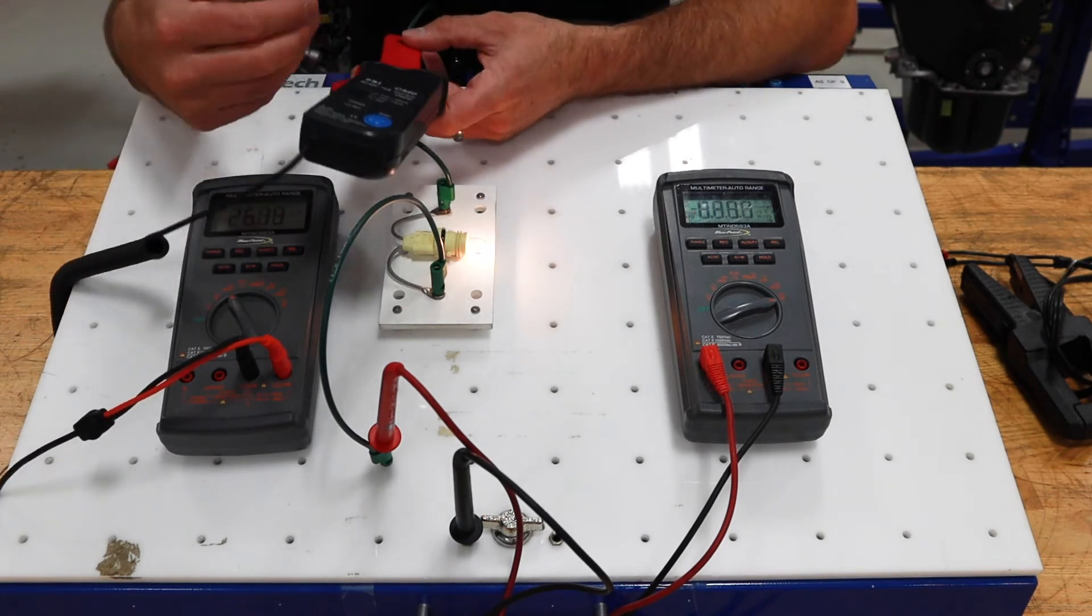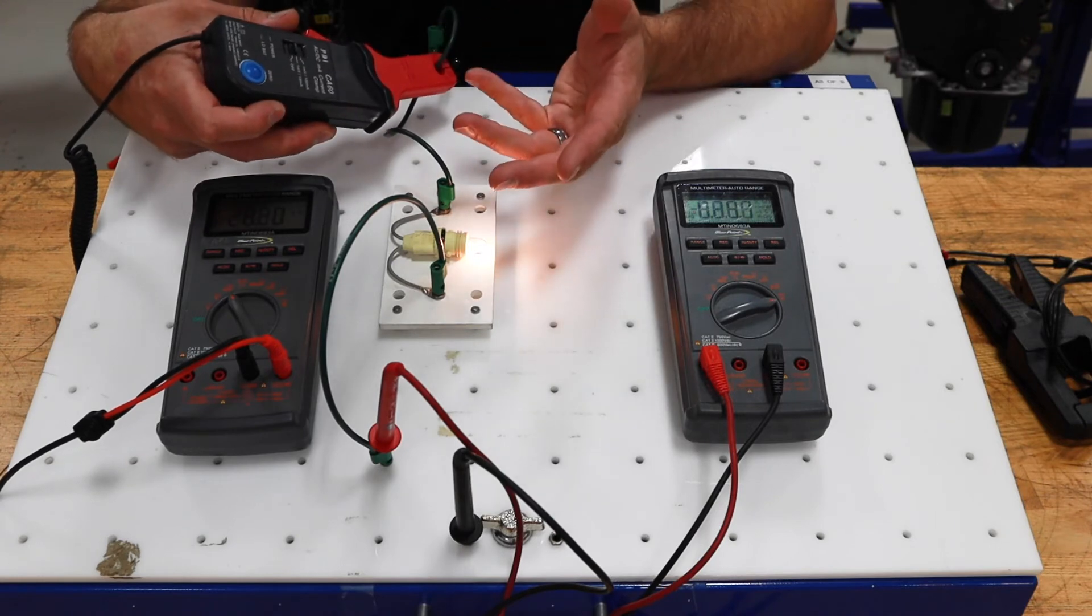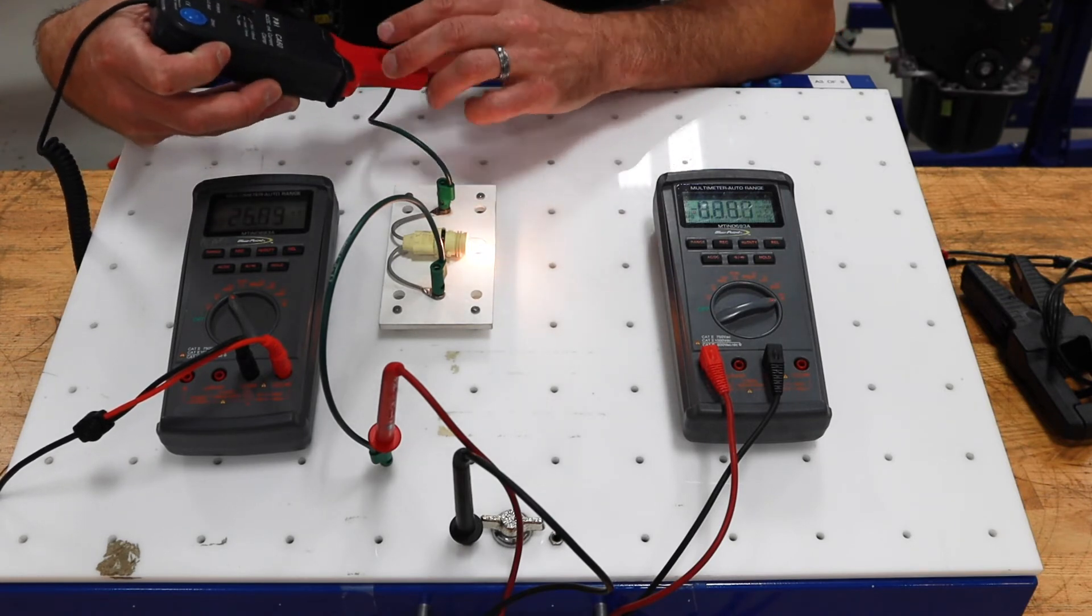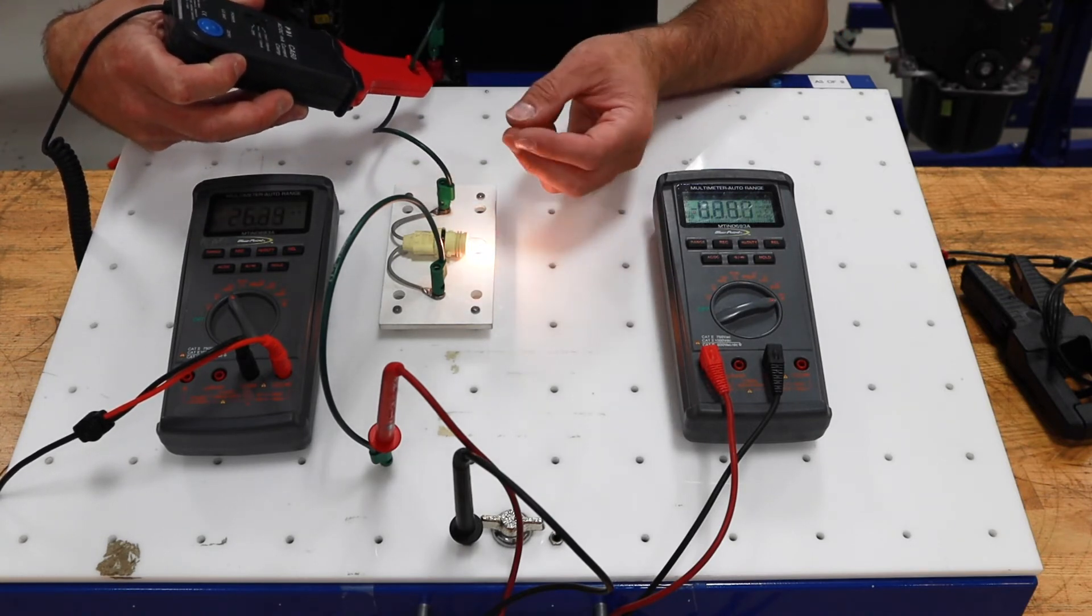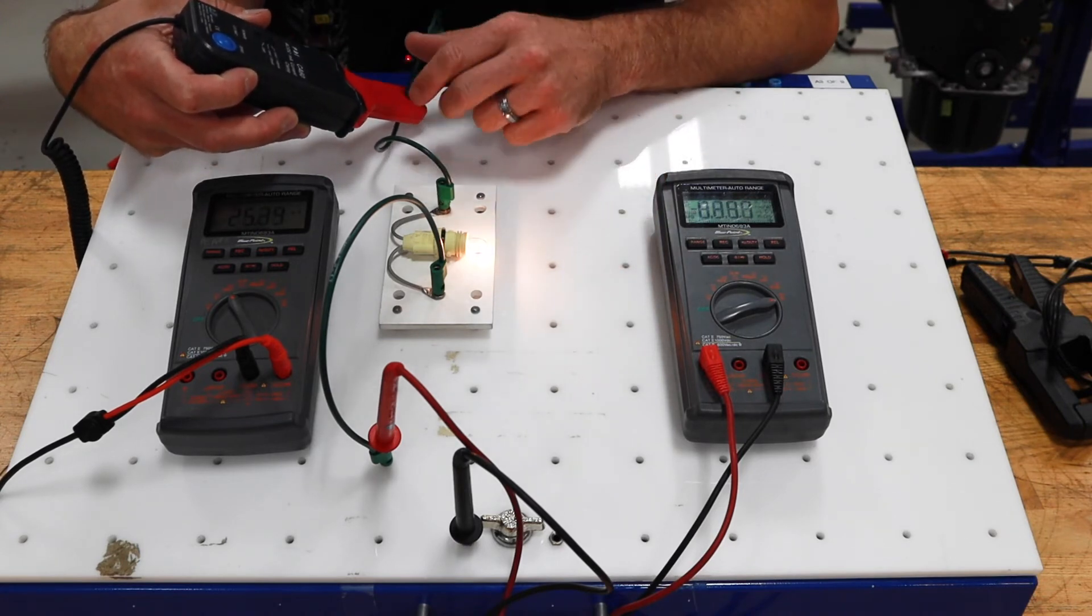The upsides of the amp clamp is that I don't have to open a circuit. So if I want to do something like a parasitic drain measurement, I can do that without having to unplug and disrupt circuits and disrupt power to modules, which can make that process take longer.